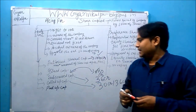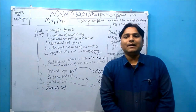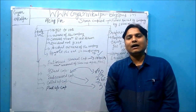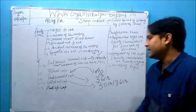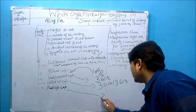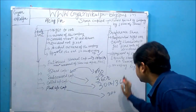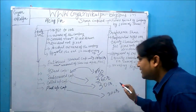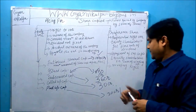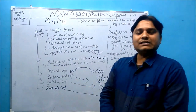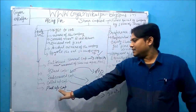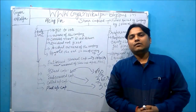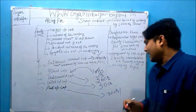Paid up capital is that amount which has actually been paid by the allottees of the shares to the company. It can be equal to called up capital, or it can be less than called up capital. If some shareholders have made default in payment of the called up capital, then that default amount is transferred to the calls in arrears account.